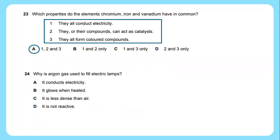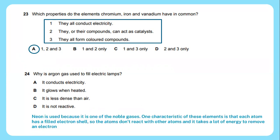Question 24: Why is argon gas used to fill electric lamps? Neon is one of the examples of noble gases. One characteristic of these elements is that each atom has a filled electron shell, so the atoms don't react with other atoms and it takes a lot of energy to remove an electron. The answer is because it is not reactive.